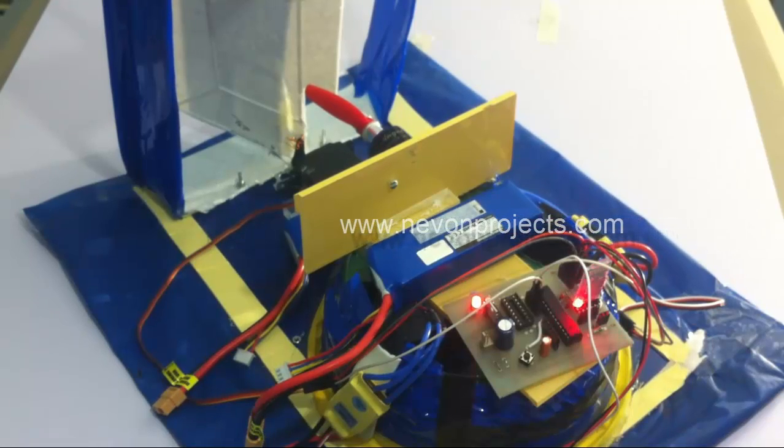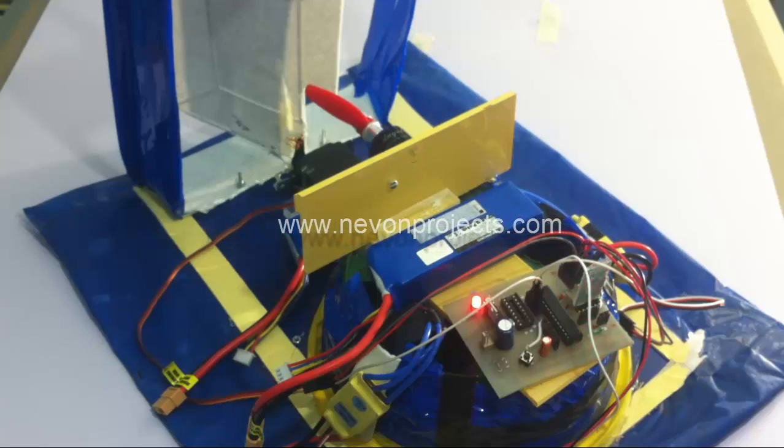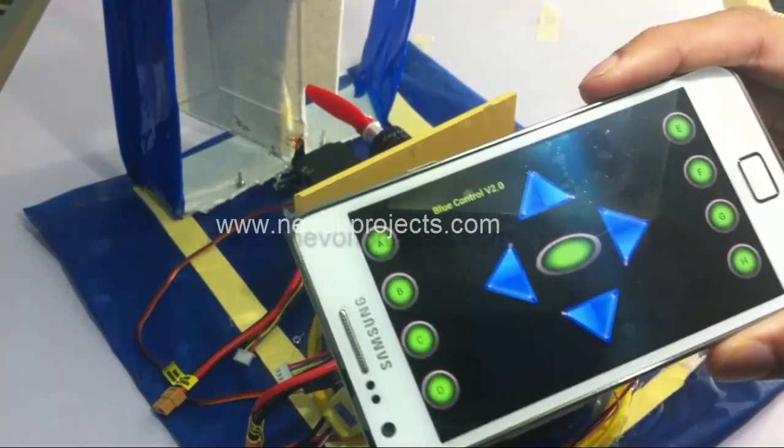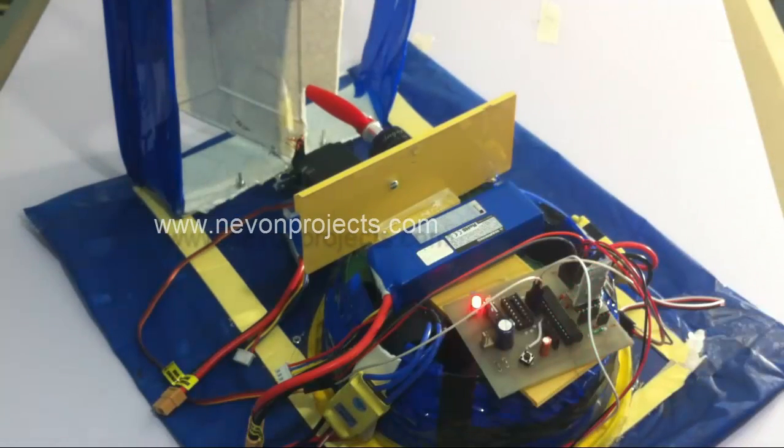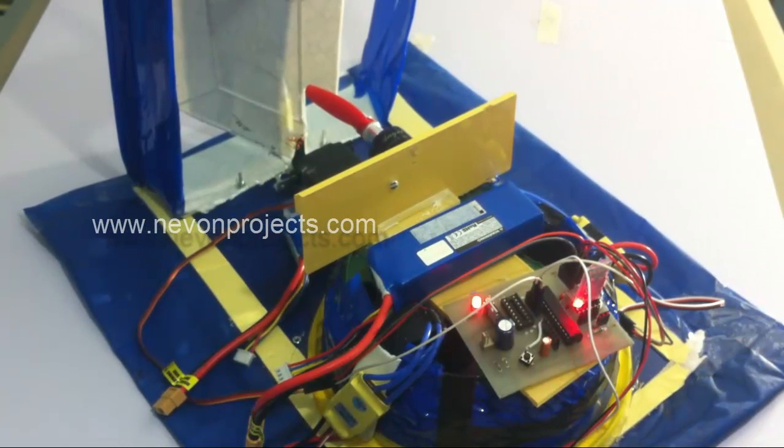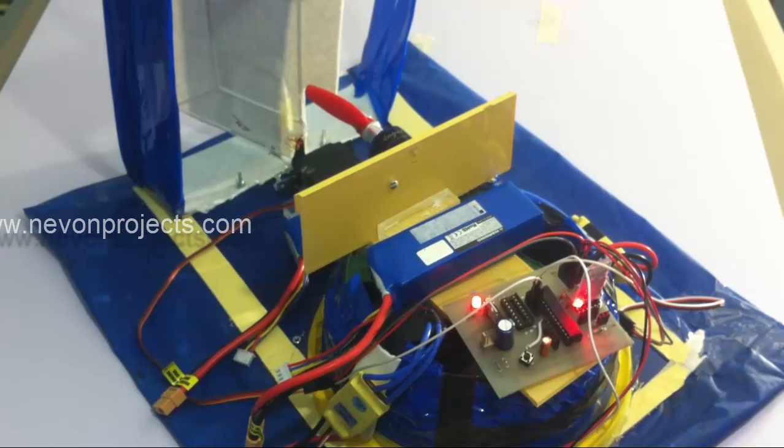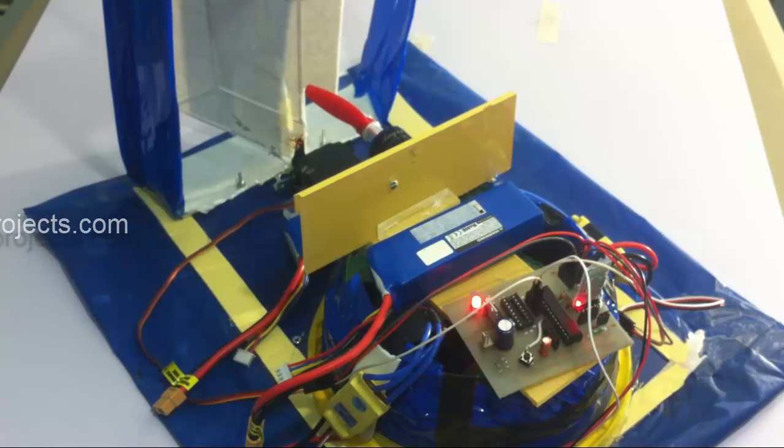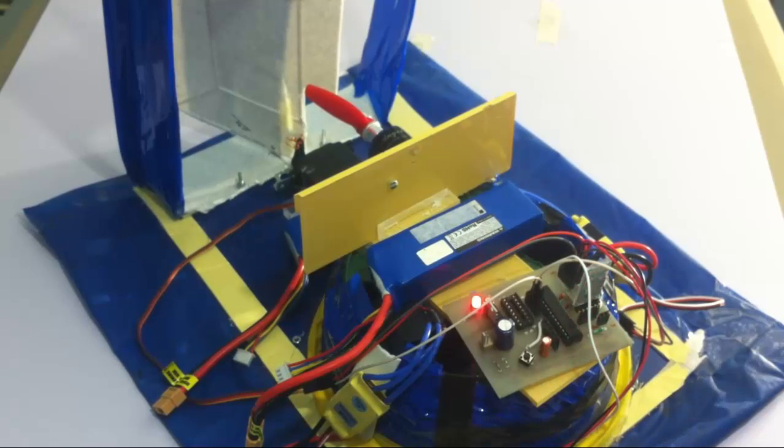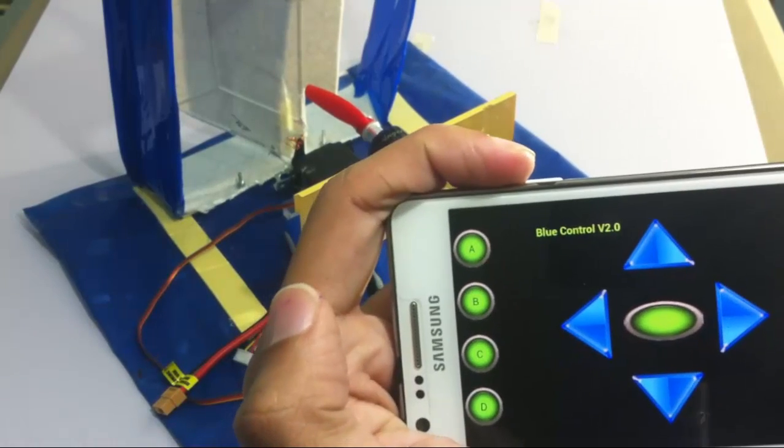So now let's start our Android application that we will be using to control the hovercraft. And now let's connect to the device here, that is the Android Bluetooth receiver. Let's connect to it. So now we have connected to it here. It shows that connection is established.